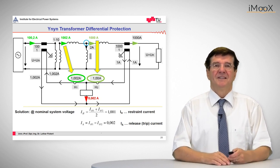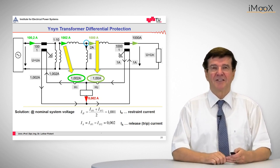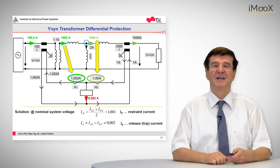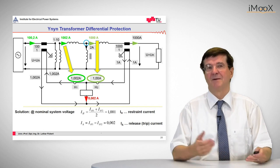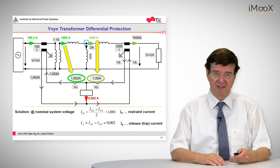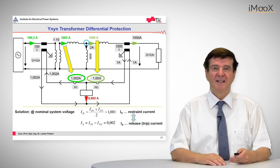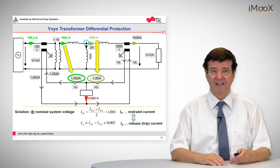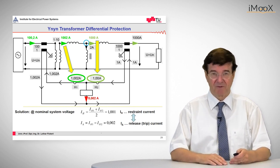So here the remedy and remedial measure is to introduce the so-called stabilizing current, the restraint current, which is made up of the sum of both the incoming and the outgoing current, and this is compared to the release differential current. If the ratio is very small, then it is thought to be an inaccuracy and nothing happens. If it is large, then a trip occurs.